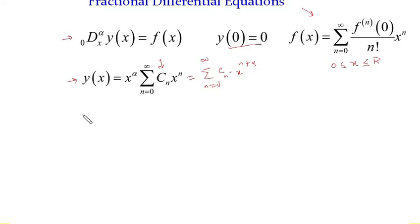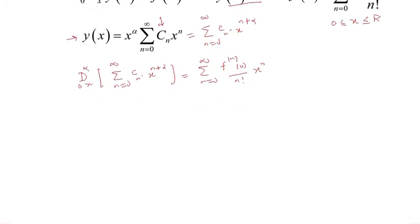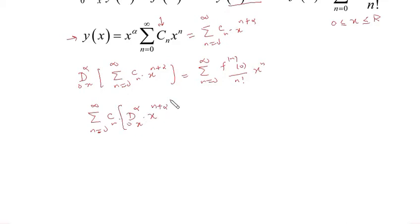Substituting, it becomes: the fractional derivative from 0 to x of order alpha applied to the summation from n=0 to infinity of c_n times x to the power n plus alpha, equal to f(x) written as the summation from n=0 to infinity of the nth derivative of f at 0 over n factorial times x to the power n. Now I bring the fractional derivative inside the summation, giving the summation from n=0 to infinity of c_n times the fractional derivative of x to the power n plus alpha.